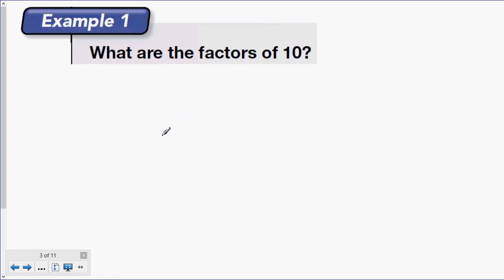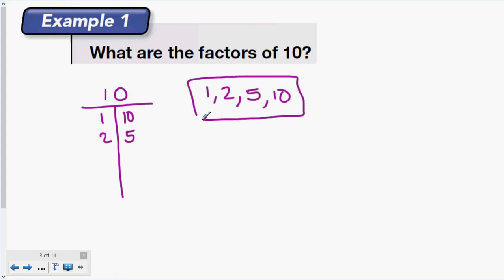Example 1. What are the factors of 10? Basically, what we want to do is list the factor pairs, the numbers that we multiply together to make 10. Some people use a t-chart, so I'll show you that way. We do 1 times 10, we could do 2 times 5. Can we do 3 times anything? No. Can we do 4 times anything? No. So the factors of 10 are 1, 2, 5, and 10. We usually list them separated with commas in order from least to greatest.